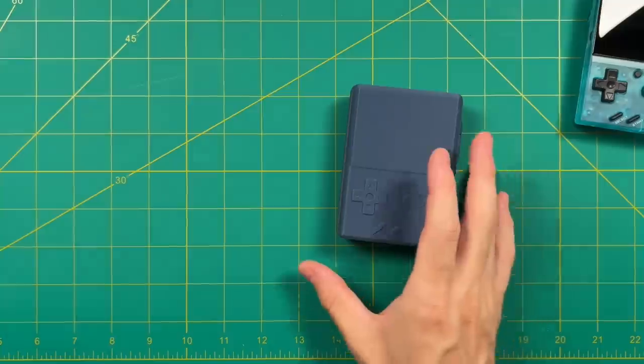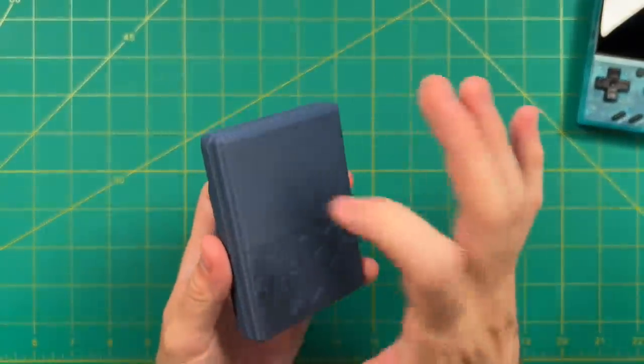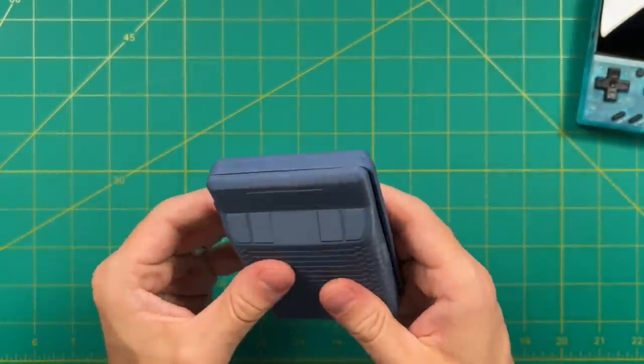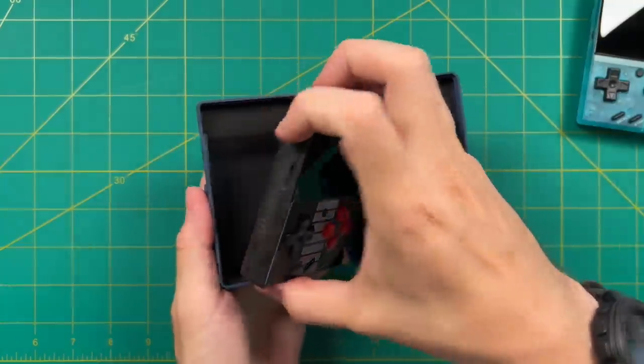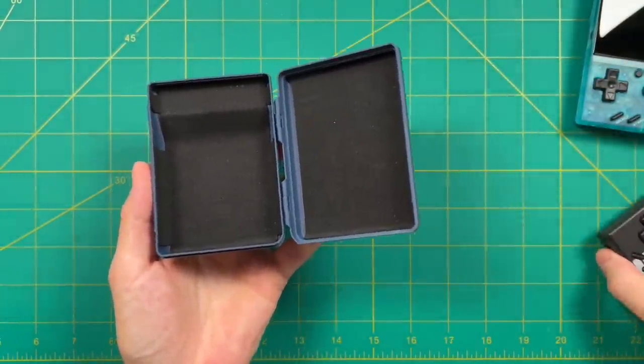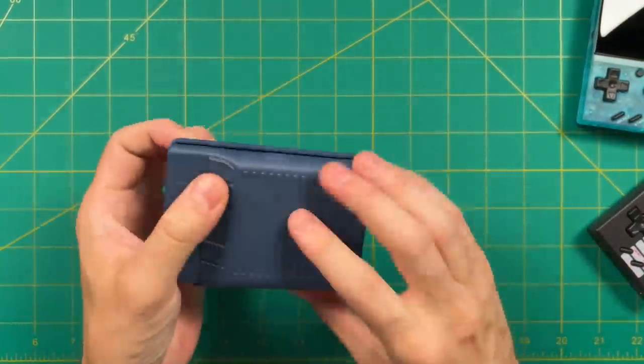I feel like this hard shell case is something that you could bring like on a deployment or to the skate park or something else like that. Like it's just really protective. So yeah, I'm a big fan of this one. I'll leave a link to the Etsy store as well. I think it might be sold out right now, but I think they're going to be getting new stock soon.